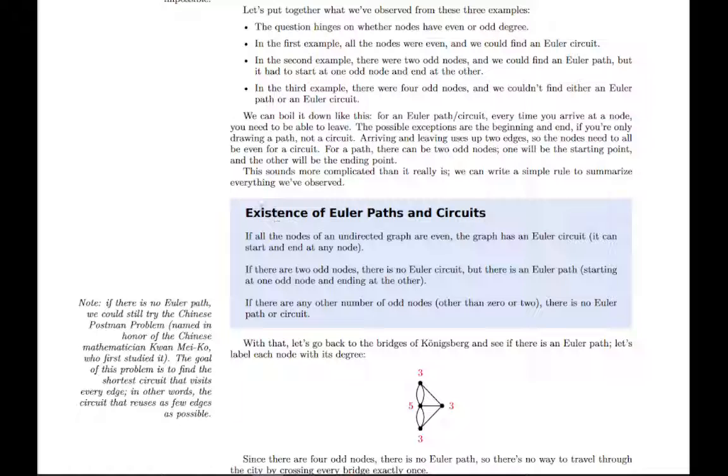It boils down to whether the degrees of the nodes are even or odd. So this example, if we label the nodes of the Konigsberg bridge problem, the top one has three edges connecting to it, so it has a degree of three, and so on for the others.